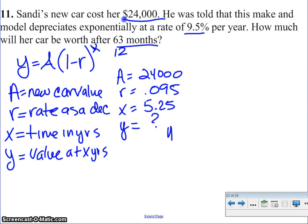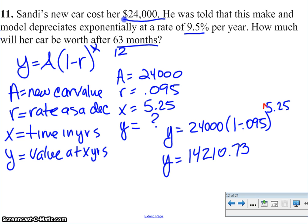So now plugging that in, I get y equals 24,000 times 1 minus .095, all to the 5.25 power. And when I plug all of that in, it's really just very simple into the calculator. It's y equals, I would put in the 24,000, open parenthesis, 1 minus .095, close parenthesis. Remember here you're going to put your carat to indicate that it's to the power of. And then 5.25, and you're going to get an answer of $14,210.73. So that one went pretty easy.